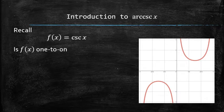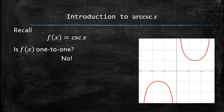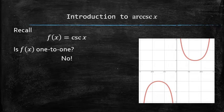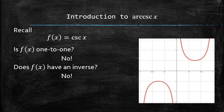Is this function one-to-one? The answer is no, because it doesn't pass the horizontal line test. Does this function have an inverse? The answer is also no, because only one-to-one functions have inverses.